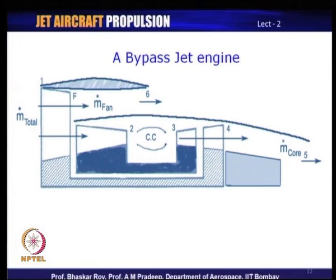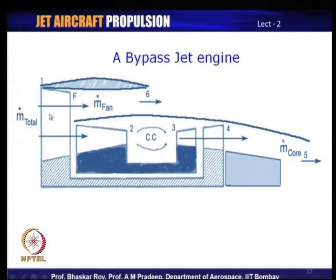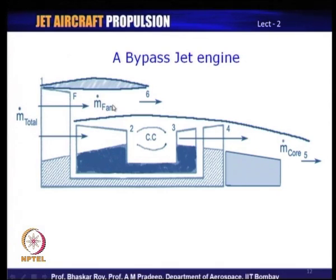There has been a bypass jet engine that was not a turbofan — it was a supersonic jet engine in which air was bypassed after the intake, and the intake created the pressurization for the bypass system. This was used in the Concorde engine. However, that aircraft and engine has now been retired from service. So all bypass jet engines we will be seeing are essentially some version of turbofan engines.